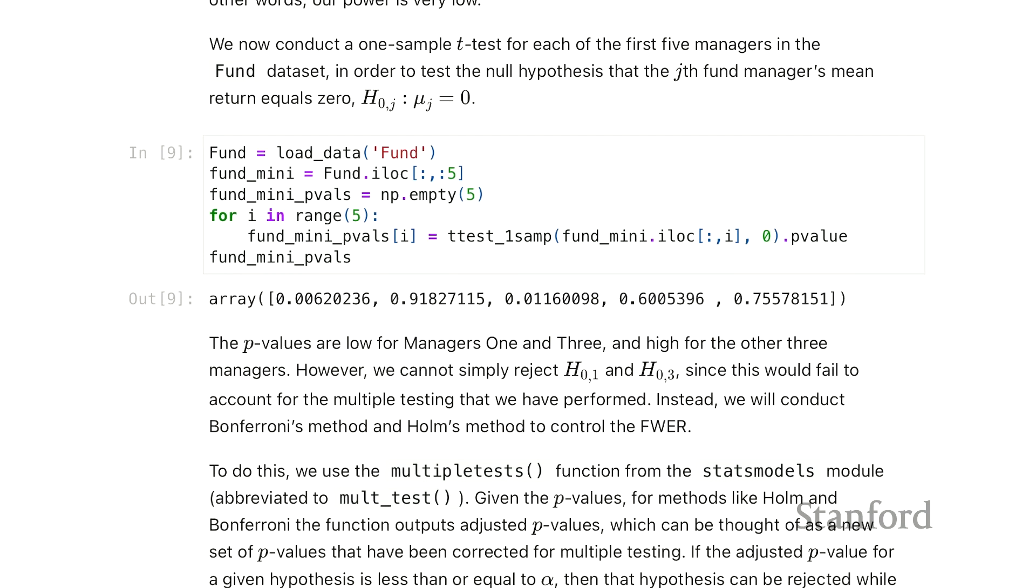There are methods to control the family-wise error rate, and we're going to look at some of those methods. So we're going to use one of the data sets, the fund data, from the package using our load data function. I believe here there are 500 managers, or some number of managers, and that's the point. Multiple comparisons is many managers. So first, we're going to look at a small sample of five of them. So we'll test whether each fund manager is beating the market, that's whether the returns average zero or not, and compute the one-sample t-test.